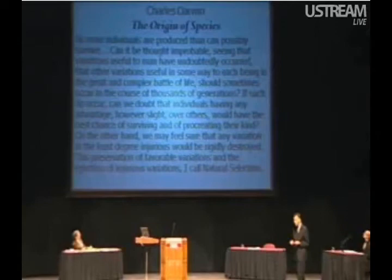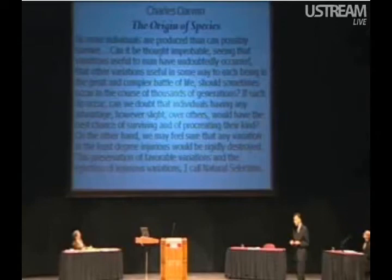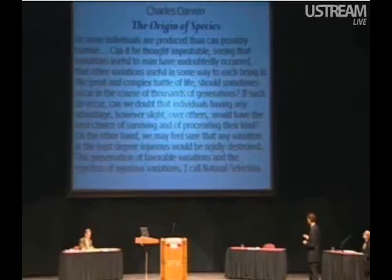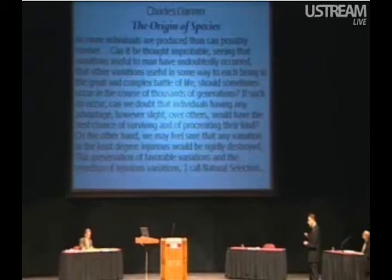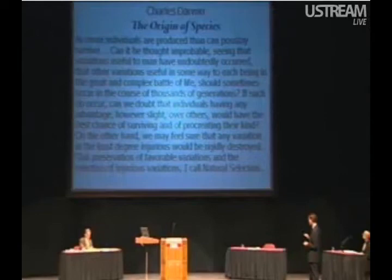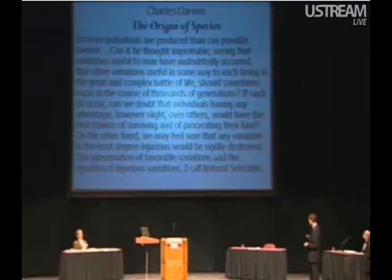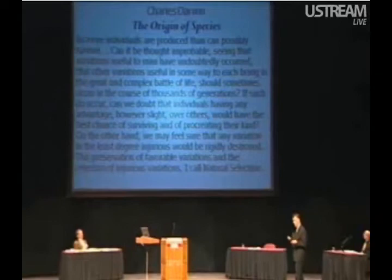This is one of the places where Darwin summarizes natural selection. I want you to pay attention to a couple of sentences: 'If such do occur — hereditary variations that can give advantage to their carriers — can we doubt that individuals having any advantage, however slight, over others, could have the best chance of surviving and of procreating their kind? On the other hand, we may feel sure that any variation in the least degree injurious would be rigidly destroyed.' This preservation of favorable variations and the rejection of injurious variations, I call natural selection.